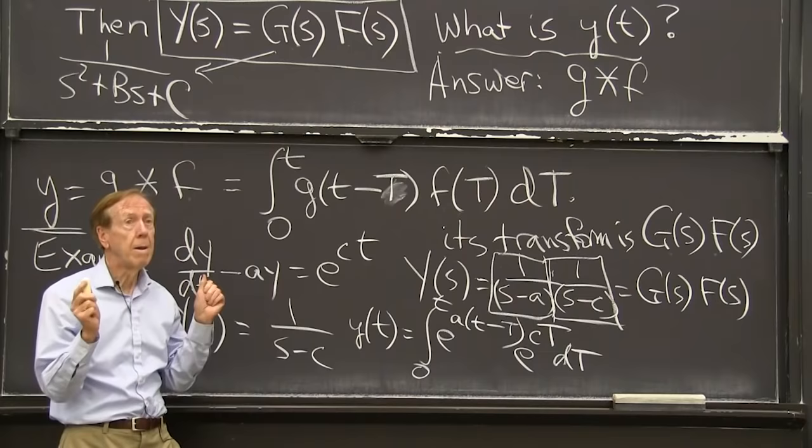So that example is a good one to show that when, so I didn't use partial fractions. Normally, I would separate this into partial fractions. And then I would recognize those two pieces of the answer. I didn't do that this time.